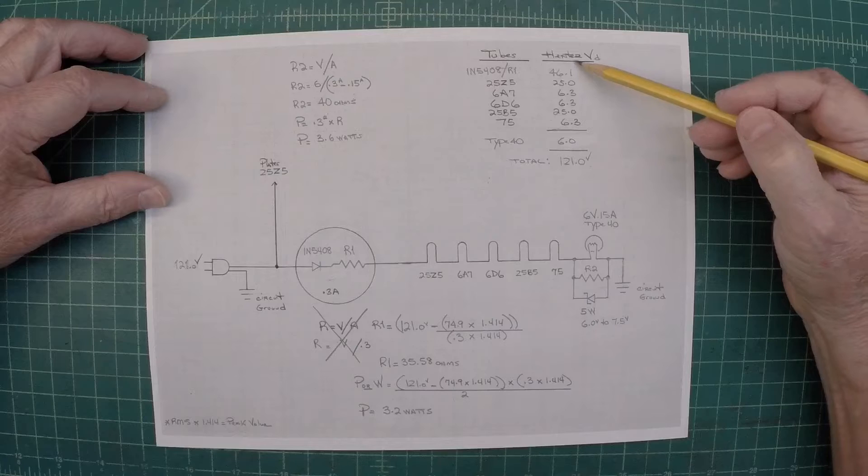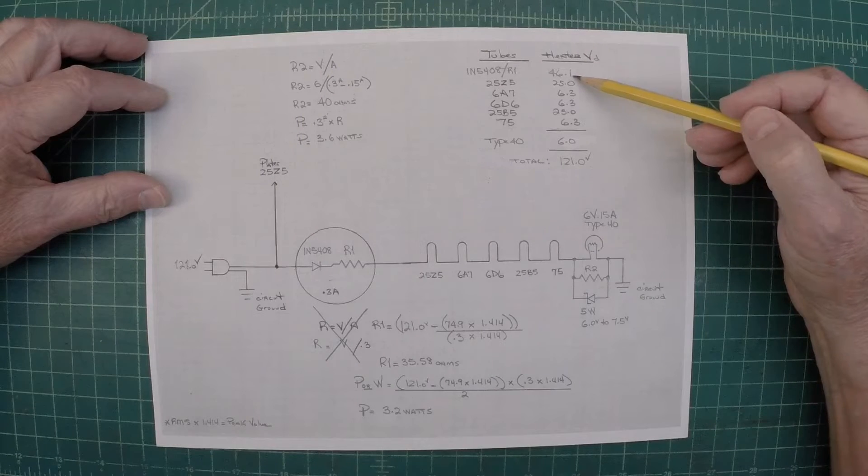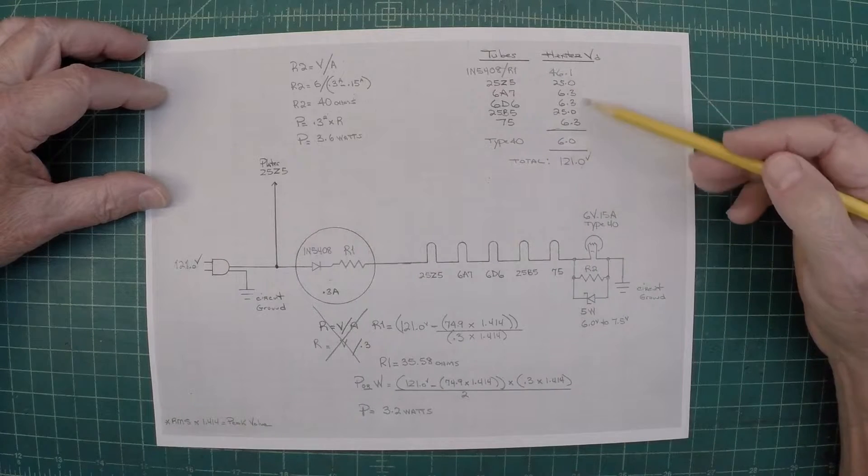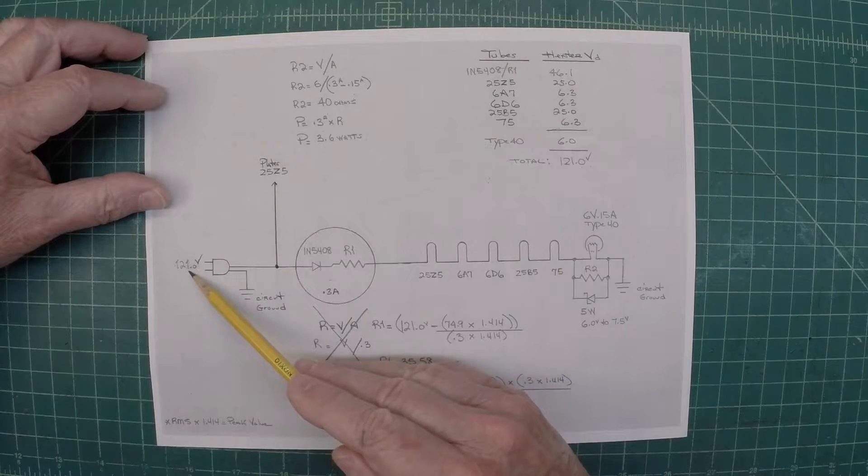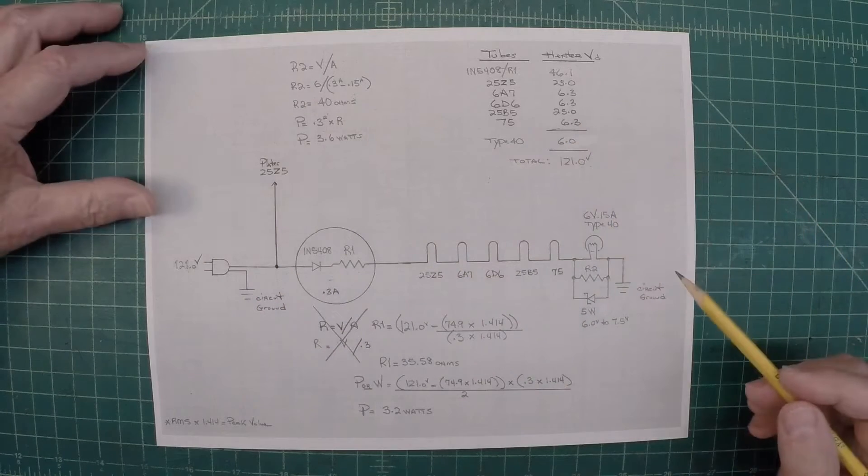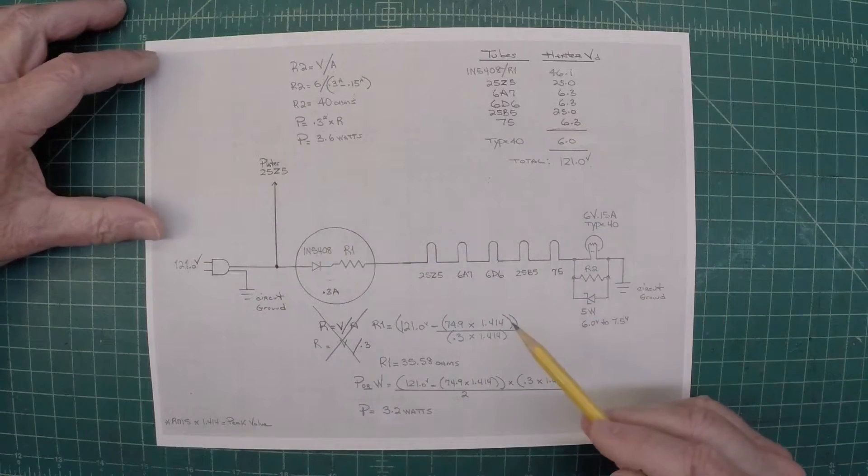So you can see, again, I have all my heater voltages, the drops here, totaling 121. So I'm using up everything that's coming in. And that's the idea. Everything should match. And I believe my math is accurate.